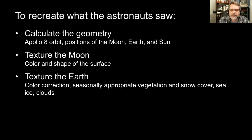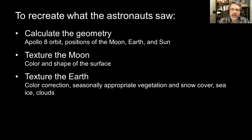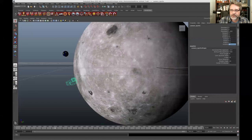In order to recreate this, I had to figure out the geometry — the positions of the sun, the Earth, the moon, and Apollo 8's orbit. I had to texture the moon, which means getting the color and shape right, and also texture the Earth, which is a little unusual for me since I usually work with the moon. This is the 3D animation software I use. The little green wireframe is the camera that renders the image I want to see, and I've put the camera in orbit around the moon in the same position as Apollo 8 around the time the Earthrise photograph was taken.